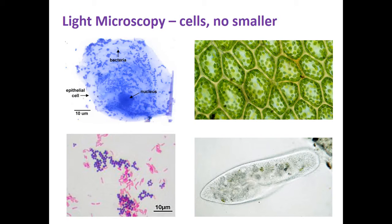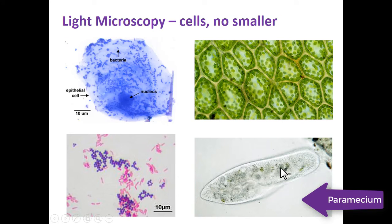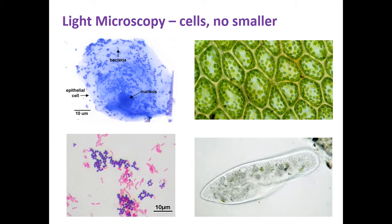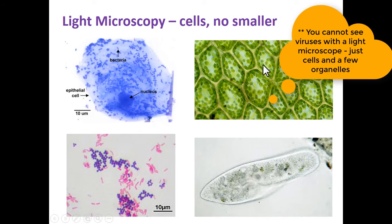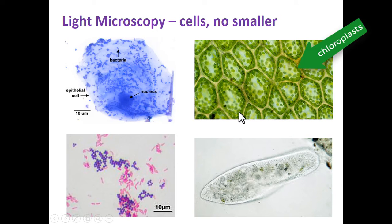The first is using light microscopy, which is what you've used in school, in the labs. Remember that most organisms are see-through, like this paramecium here, so you can't see many details with the light microscope. Unless it's a plant where there are chloroplasts — those are nice and green, you can easily see those. But most of the time with light microscopy, we're going to use staining.